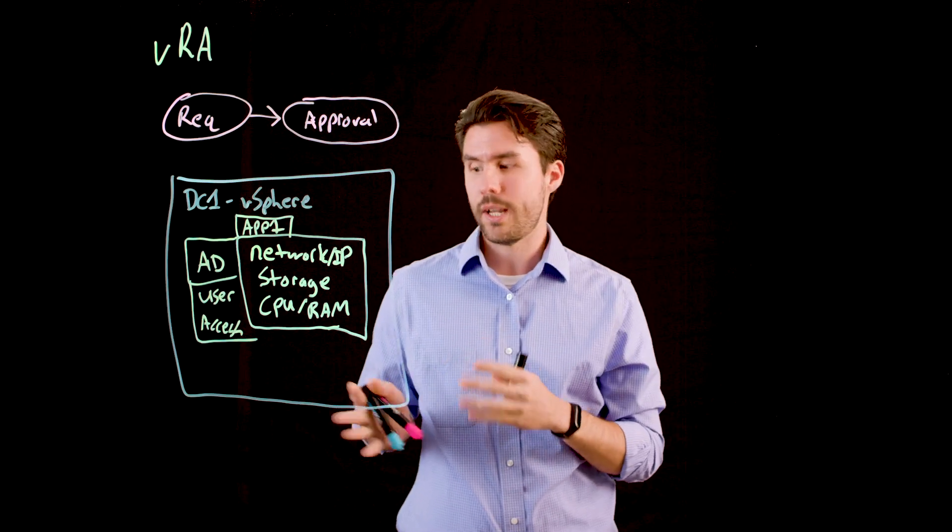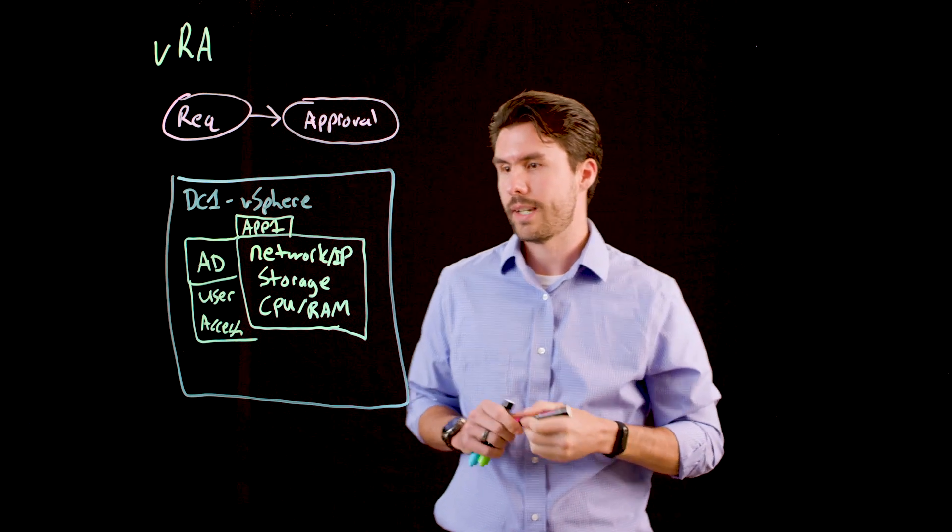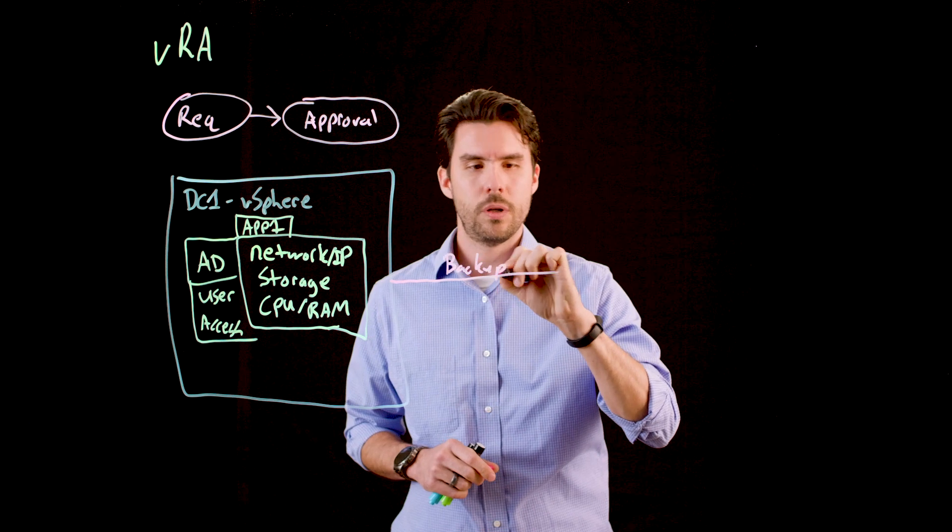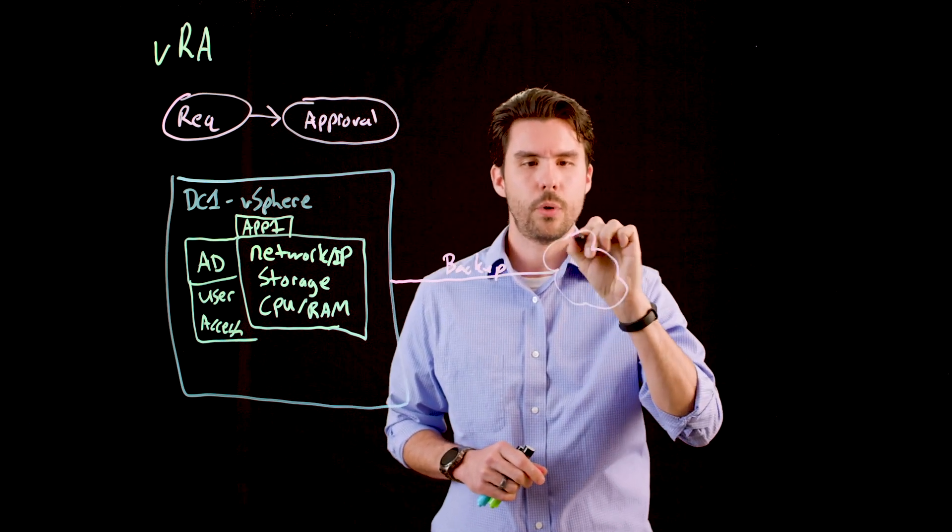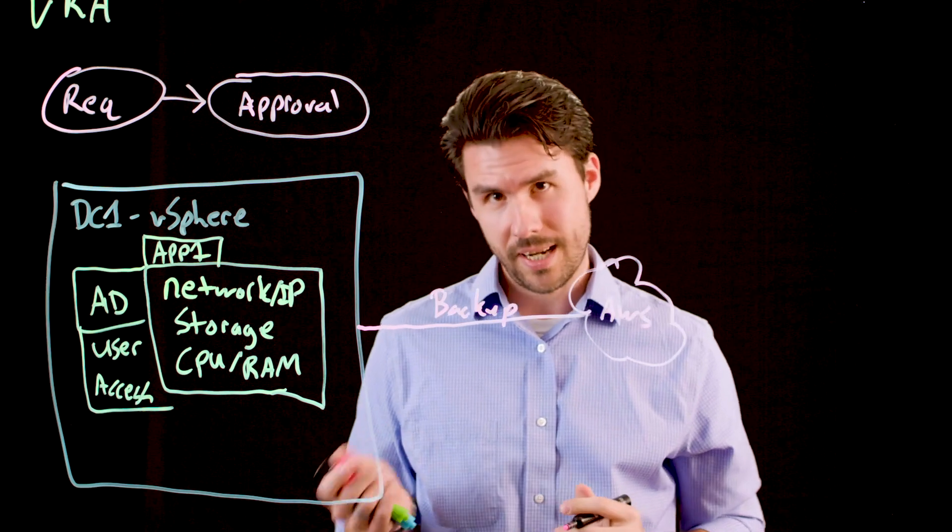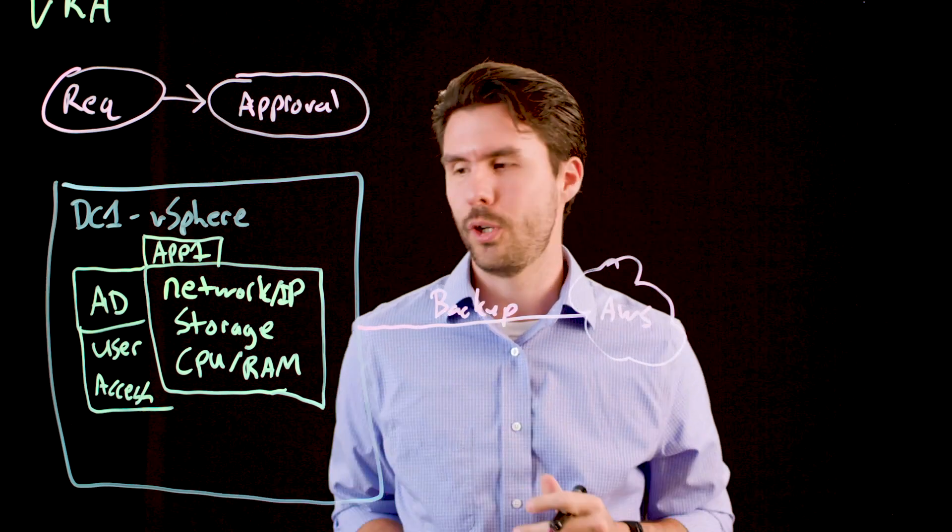Now, while everything's in a great state, it will be really wise to go ahead and take a backup of this VM. And to do so, we're going to put this one in AWS. We'll throw it in Glacier. That way, when the person that we just granted access to breaks things later on, we know we can get it back to a known good state.